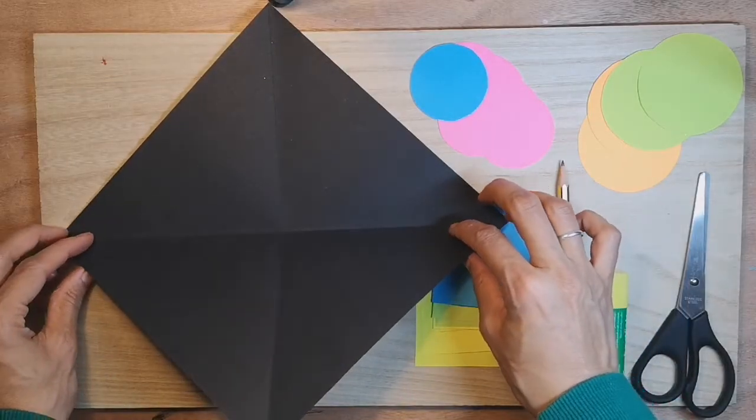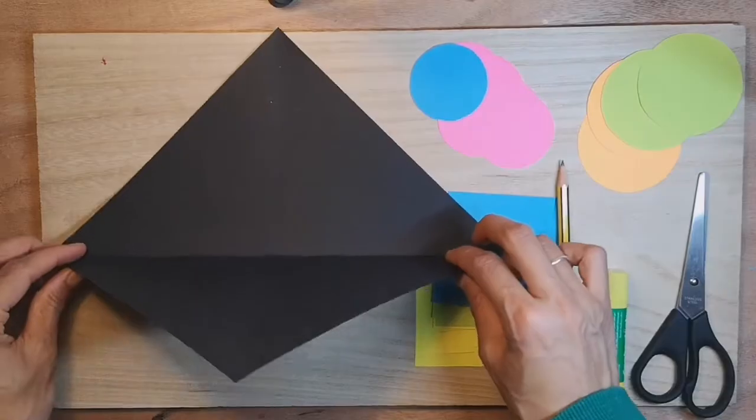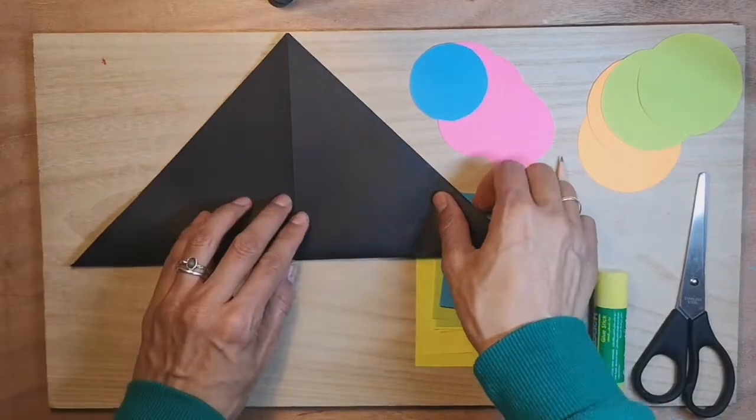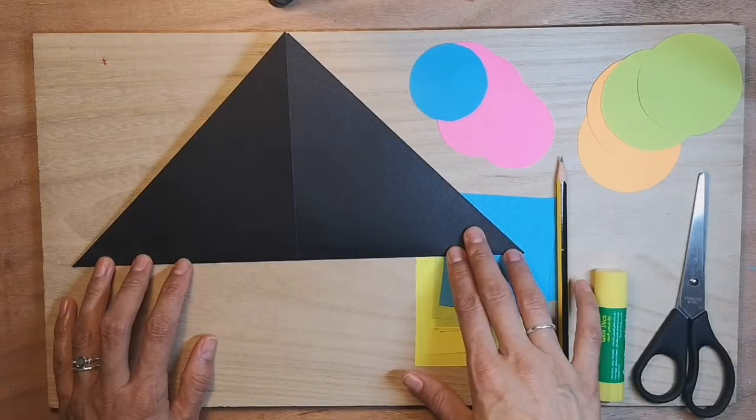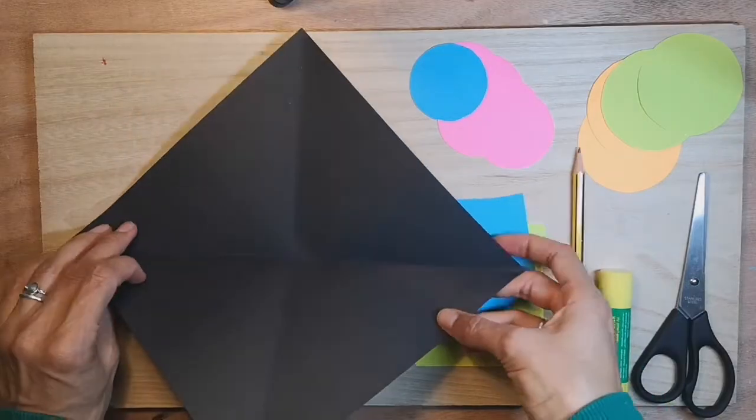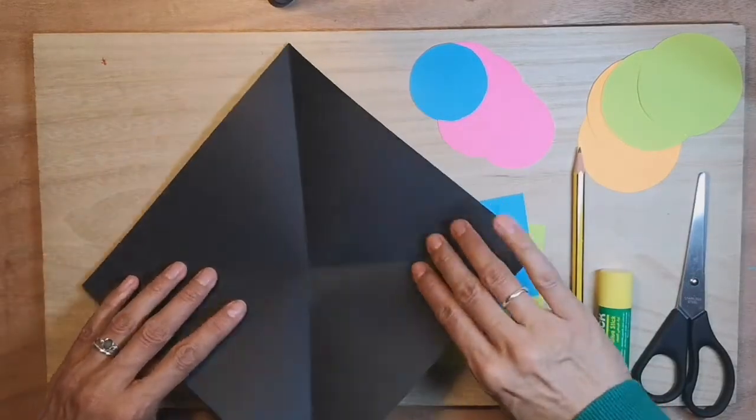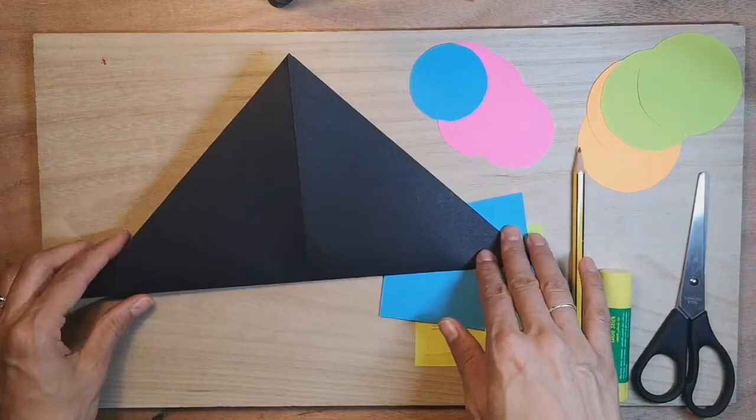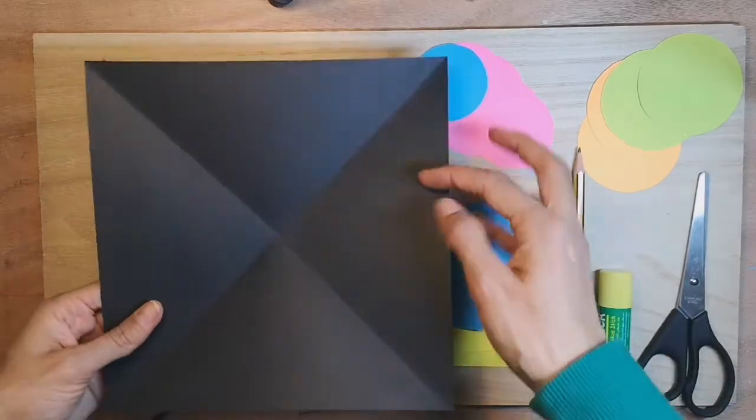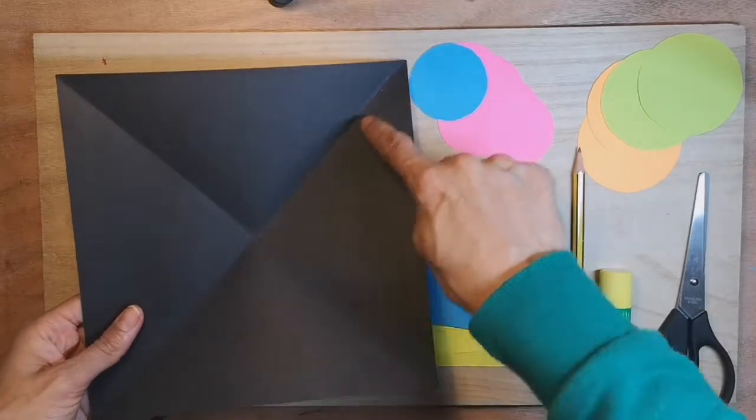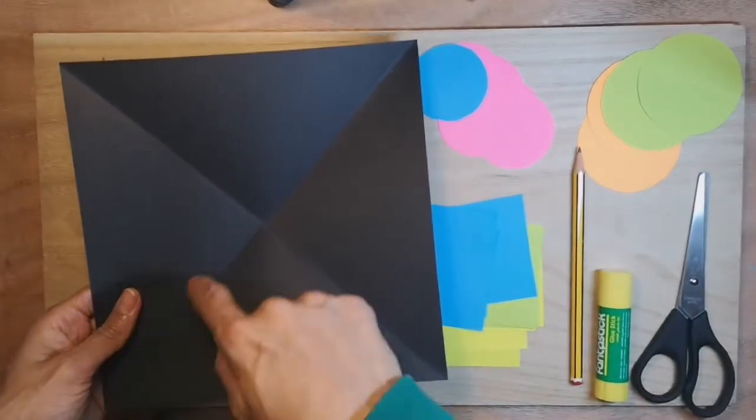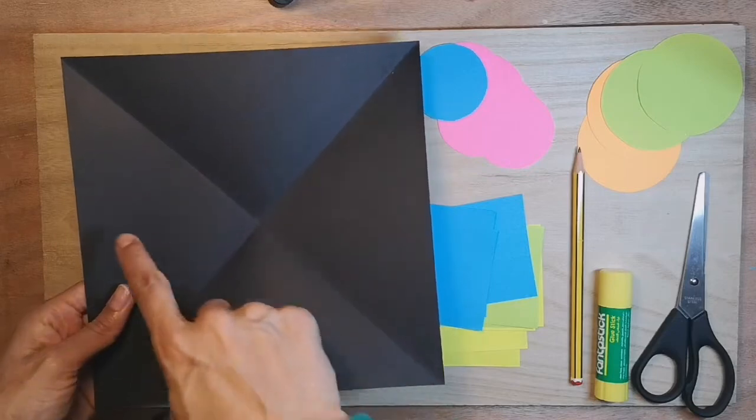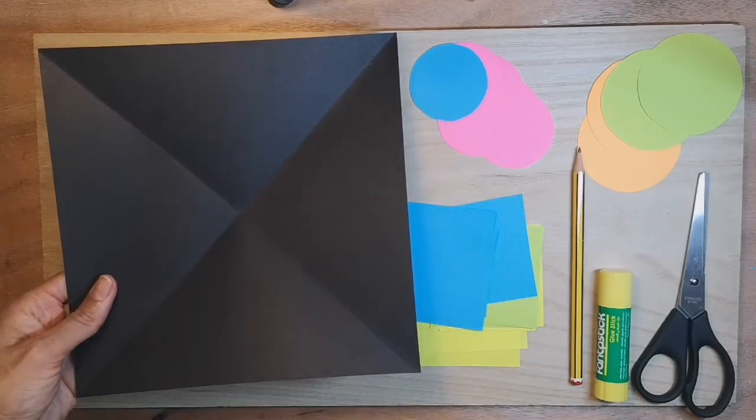Firstly fold your square into half this way. Then turn it round and fold it carefully in half the other way. So now you've got a point at the center and you've got the lines dividing it into four quarters.